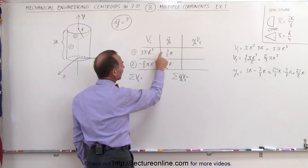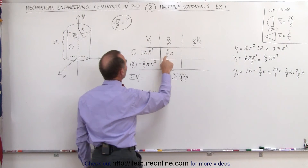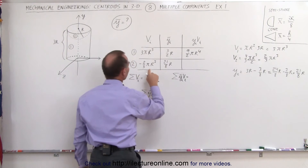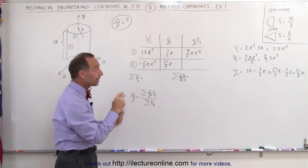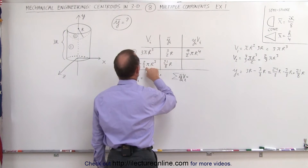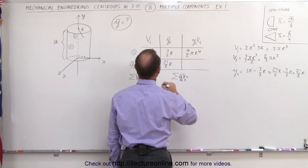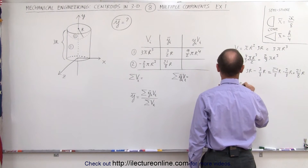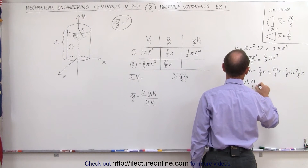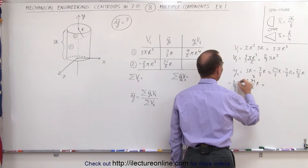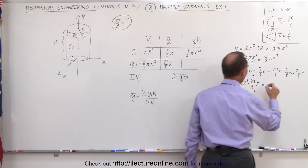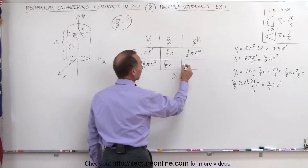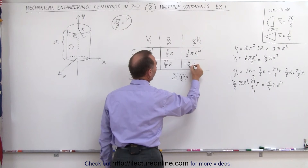Now we're going to multiply the volume times the centroid. When we do that, notice we have nine over two pi r to the fourth for the cylinder. For the semisphere, we multiply negative two-thirds pi r cubed times twenty-one over eight r. The three and the twenty-one cancel, and the two and the eight cancel, leaving us with seven over four pi r to the fourth — and it's negative, because the semisphere is hollowed out. That gives us negative seven over four pi r to the fourth.